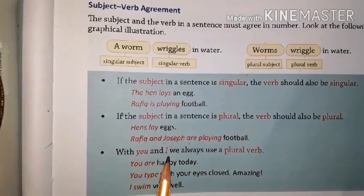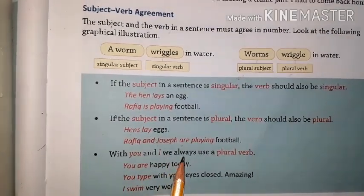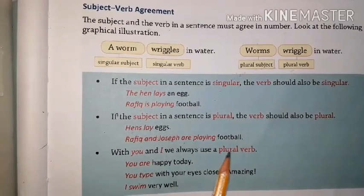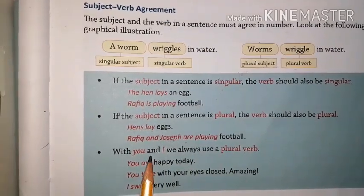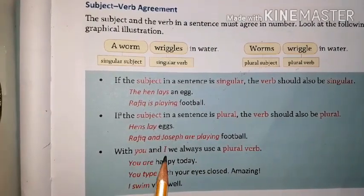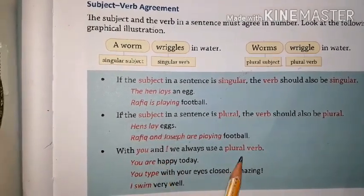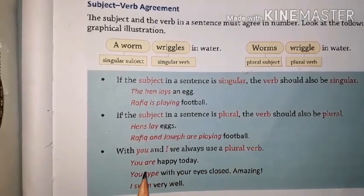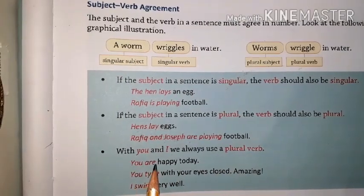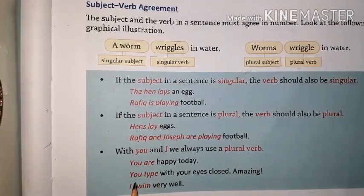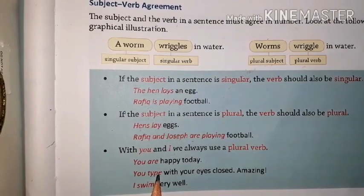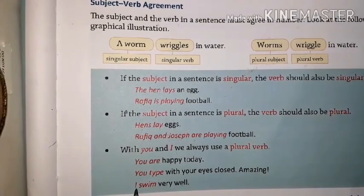For example, 'Rafik and Joseph' — the subject is plural, there are two persons, so it takes a plural verb. With 'you' and 'I', we always use the plural verb. 'You are' uses a plural verb, and 'I' also takes a plural verb.